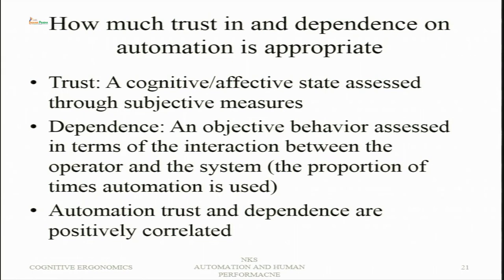Consider a missile: information acquisition — taking feedback from the environment as the missile progresses toward the target — information analysis, and decision selection can all be done by the automated system. But selecting the target and implementing the action may be left to the human being alone — the operator decides when to fire the missile. The question then becomes: how much trust in and dependence on automation is appropriate, and will over-trust or under-trust influence performance positively or negatively?